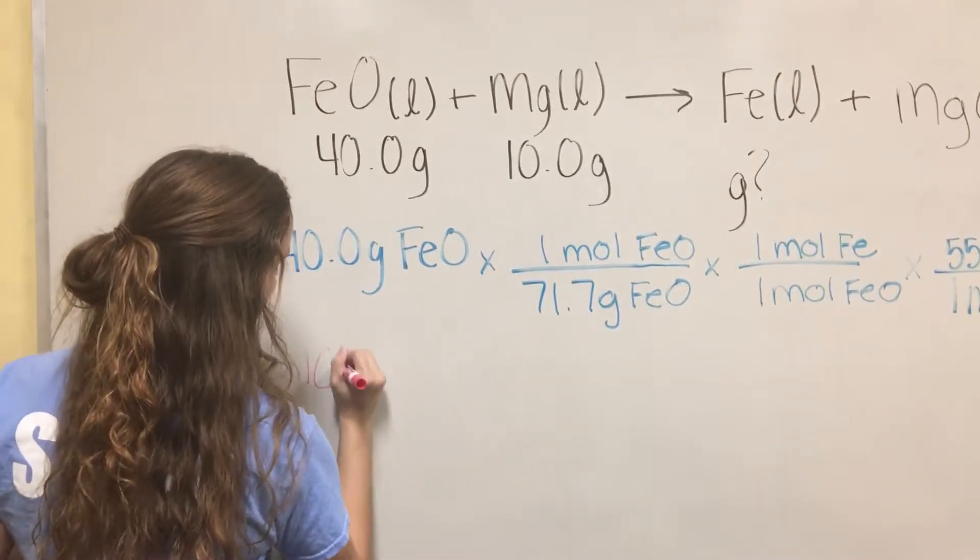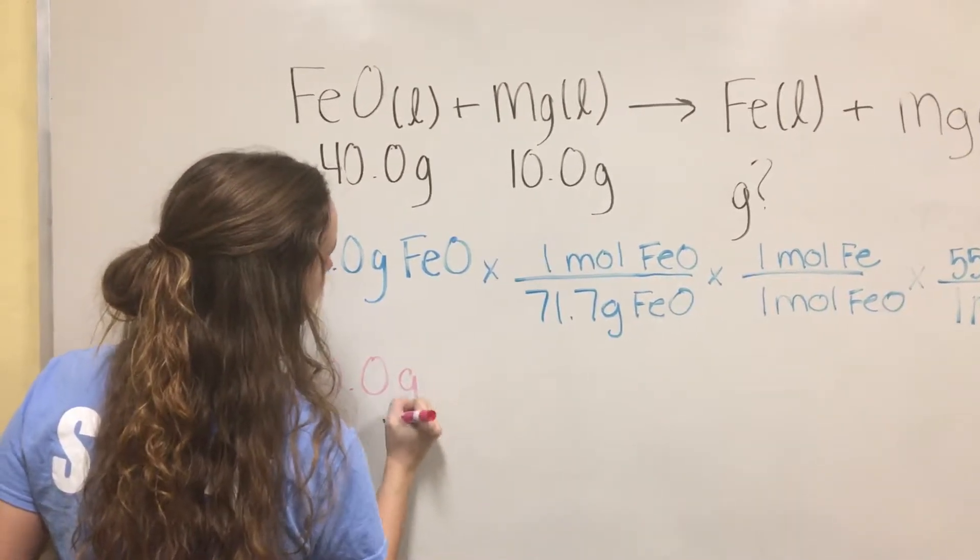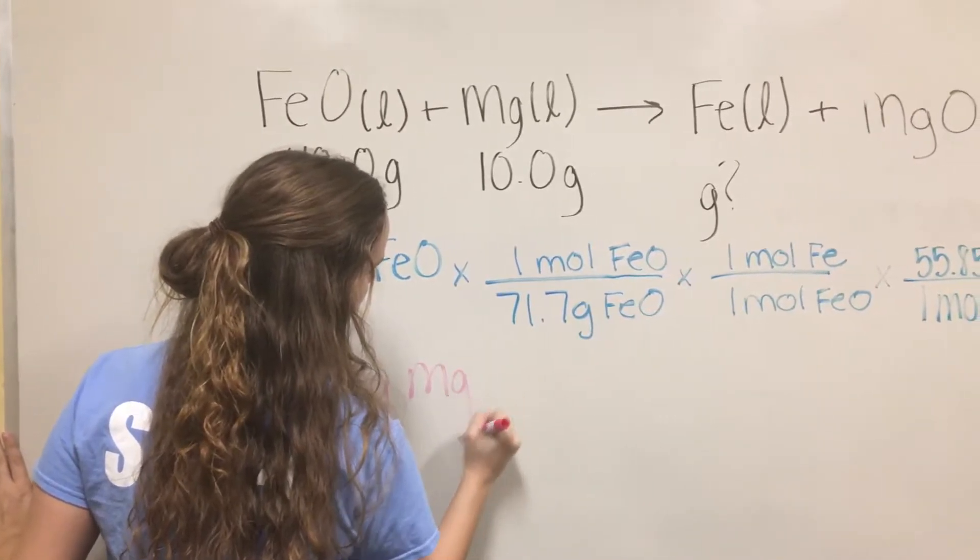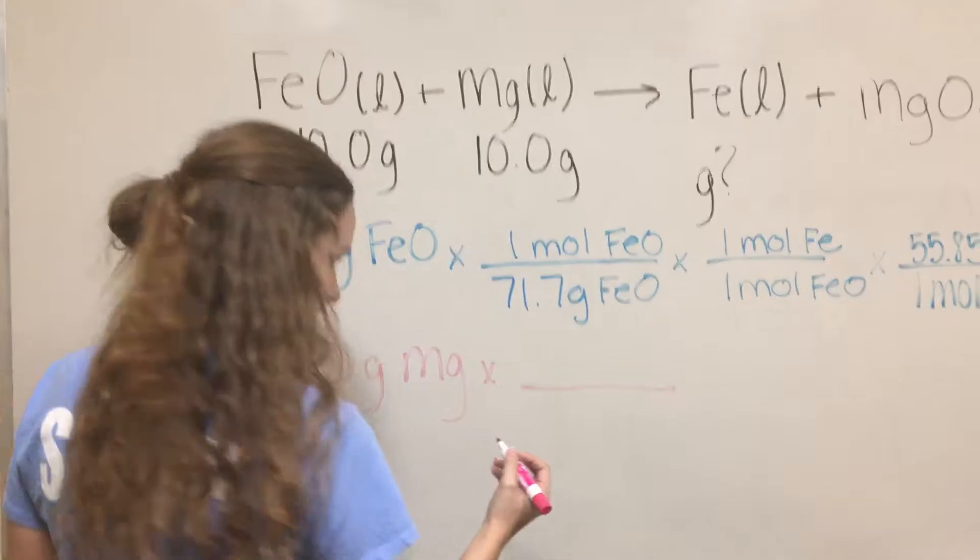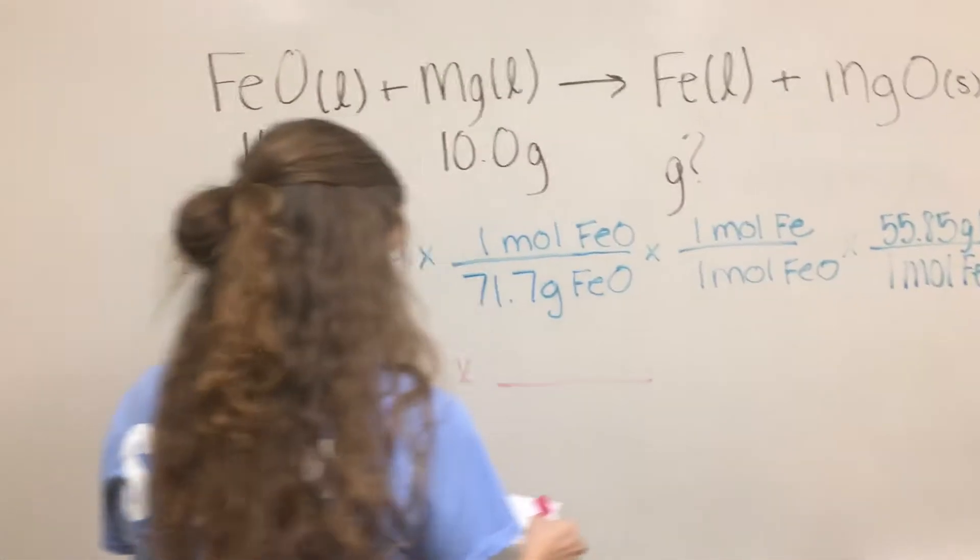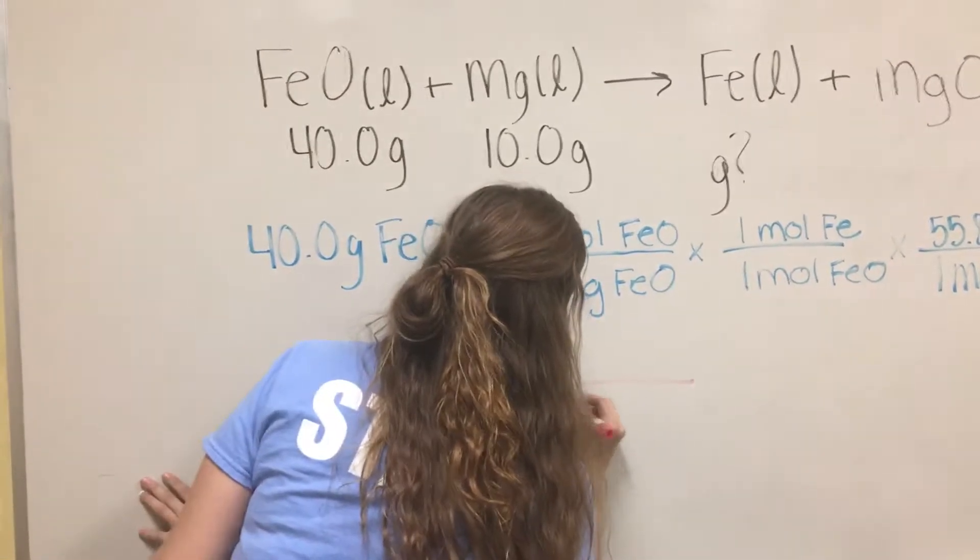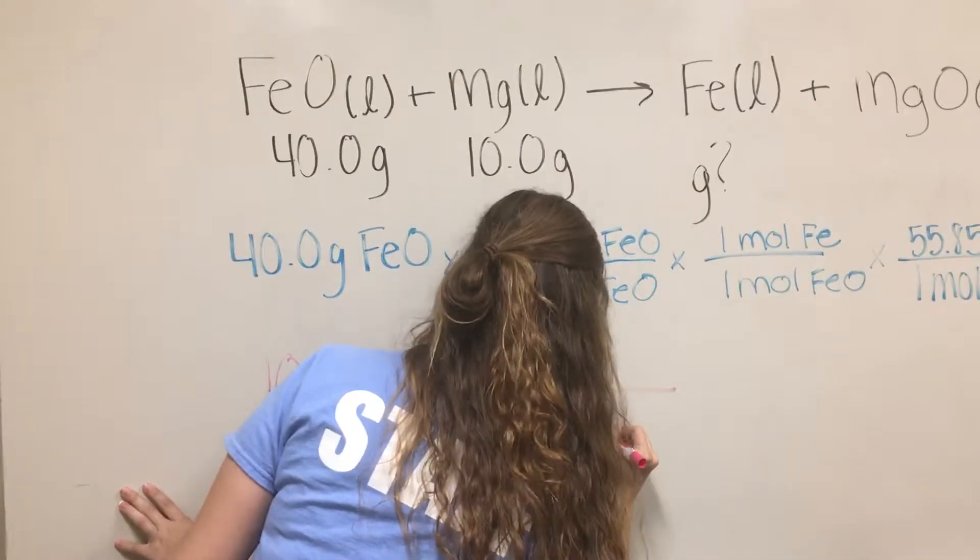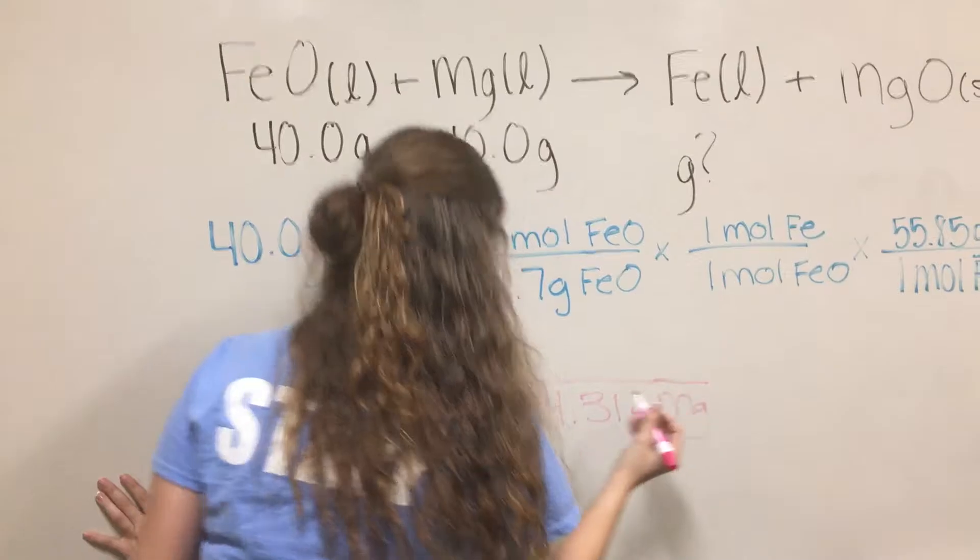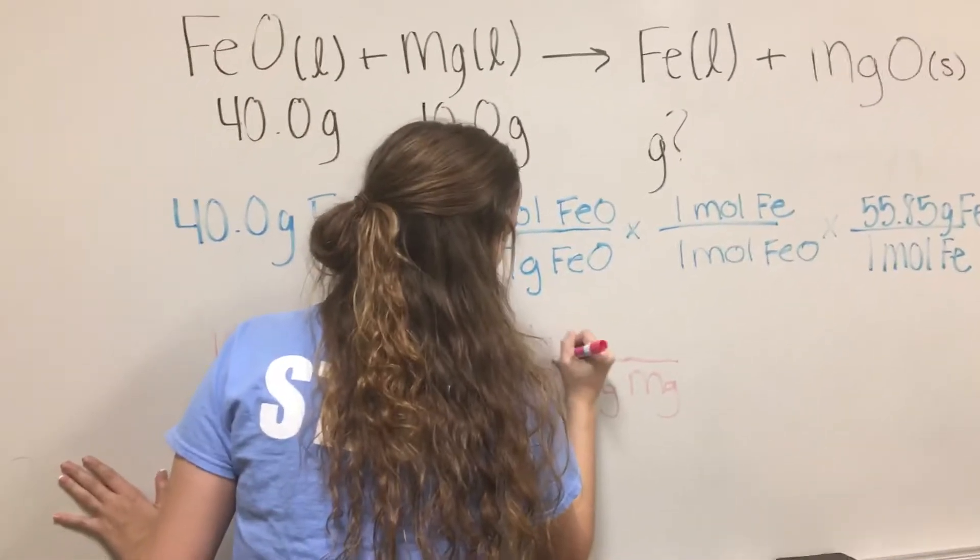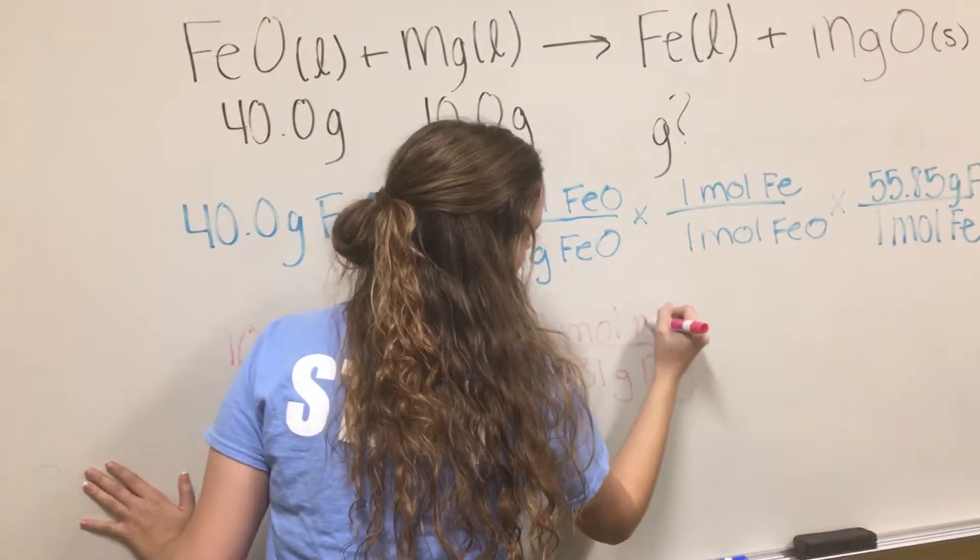Next, we're going to start with our 10 grams of magnesium, and we're going to find the molar mass of that, which was 24.31 grams of magnesium, which is equal to 1 mole of magnesium.